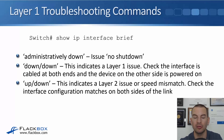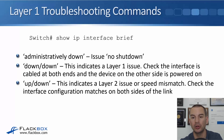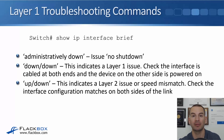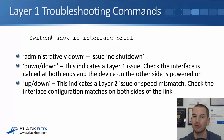If the interface shows down/down, that means the administrator has done a no shutdown on the interface but there's a layer 1 issue. Check that it is cabled in at both ends and that the device on the other side is powered on. If the device on the other side is powered off, or if you don't have a cable securely connected on both sides, the interface will show as down/down.